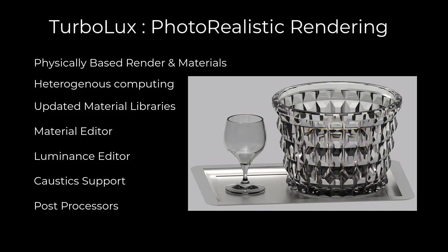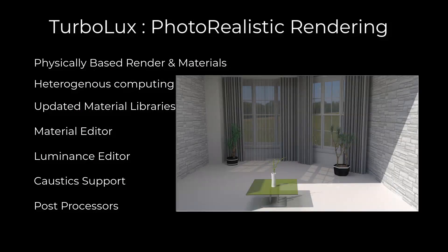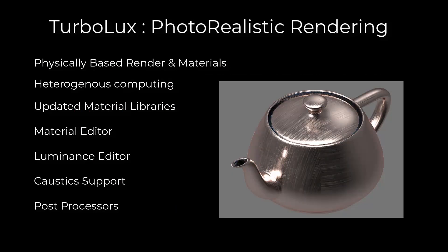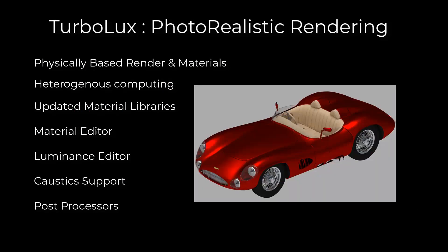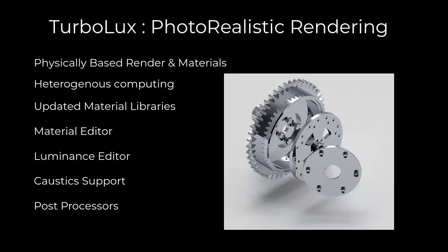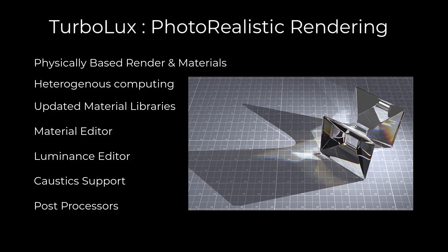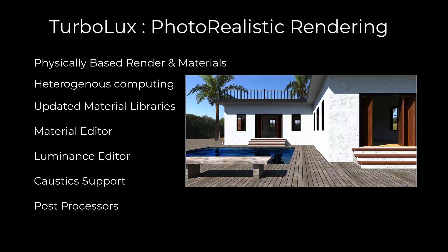TurboLux is based on state-of-the-art algorithms that accurately model light paths and materials. Features include support for CPU and GPU devices, PBR material libraries, a material editor with 17 shaders, a luminance editor supporting 13 different light types, caustics using bi-directional light tracing, and post-processing for tone mapping, gamma correction, and denoisers.